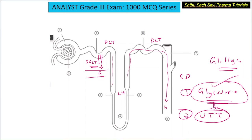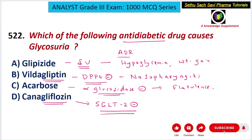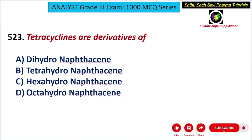So gliflozin drugs cause glycosuria because they are SGLT2 inhibitors, preventing glucose reabsorption. All gliflozin drugs have a chance to cause urinary tract infection because of glycosuria. Coming back to the question — which antidiabetic drug causes glycosuria? The answer is the gliflozin drug. The correct answer is D choice, canagliflozin.